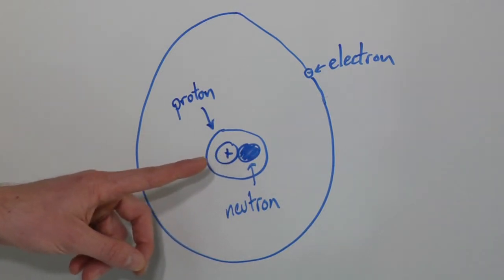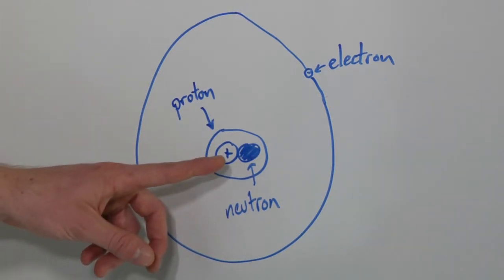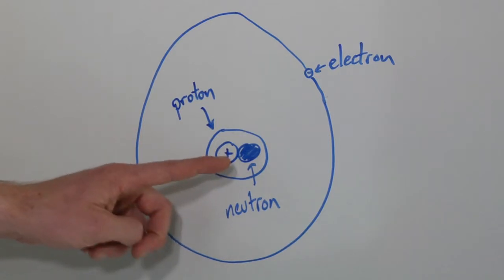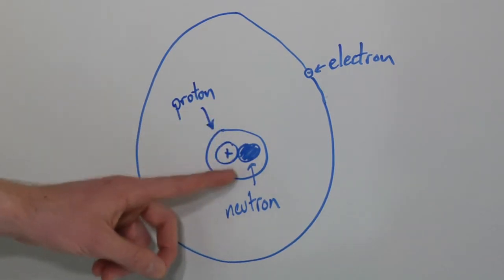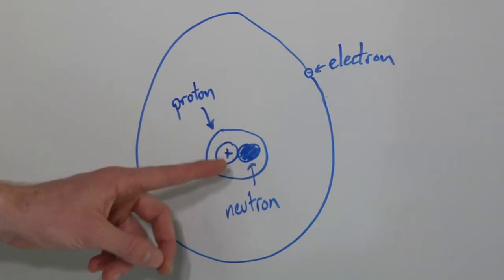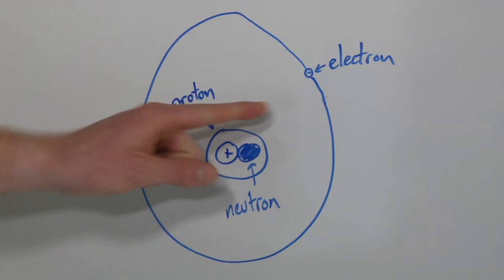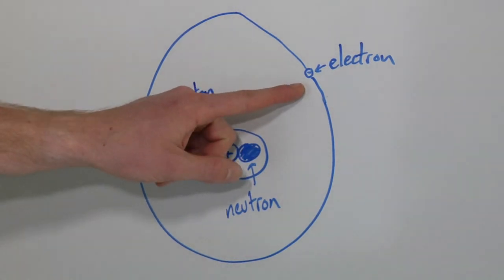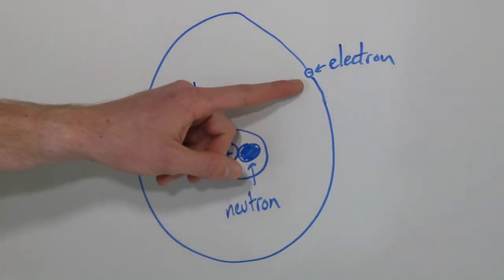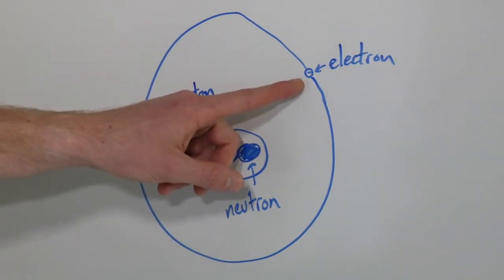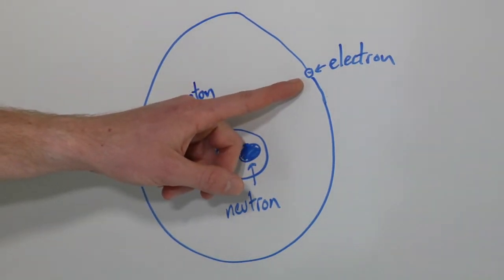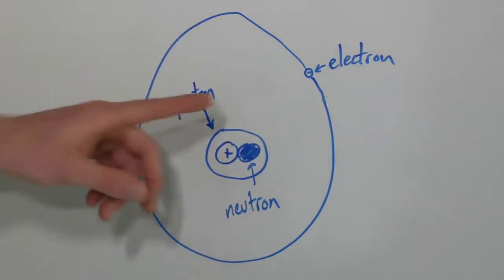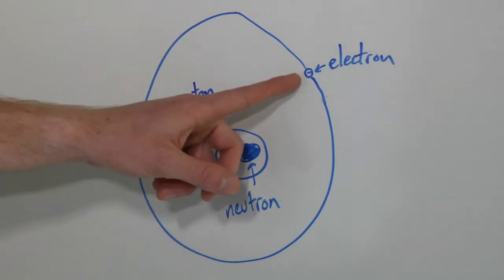The term was stolen from biology, but that's okay — we'll let them use it in this context. So you have a nucleus with a proton and neutron. Then you have an electron outside somewhere, sort of orbiting around, traveling around in circles around the nucleus.